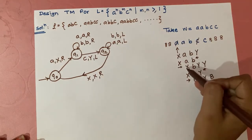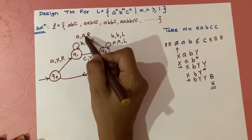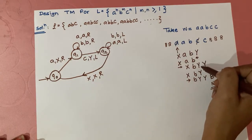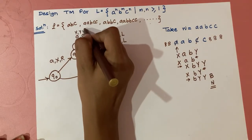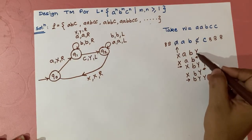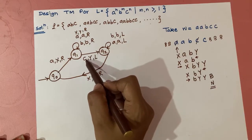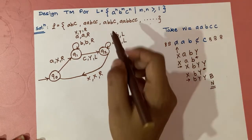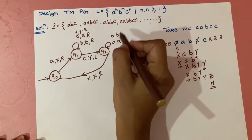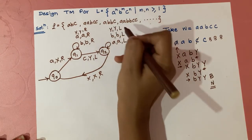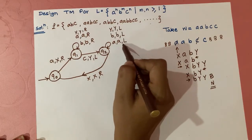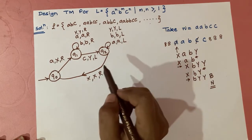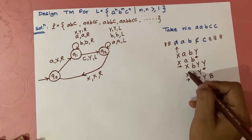While moving right in subsequent passes, we encounter a's replaced by a's, b's replaced by b's, and now also y's from previous passes, which get replaced with y's moving right, until we find the first remaining 'c' to replace. That 'c' gets replaced with 'y' and we move left. On the return path, y's get replaced with y's, then b's, then a's, until we reach the first 'x,' returning to state q0.